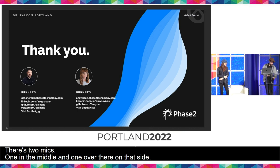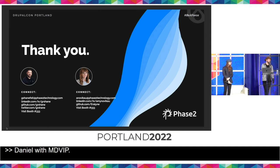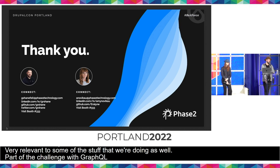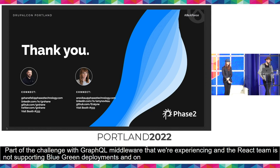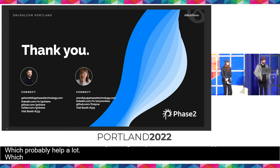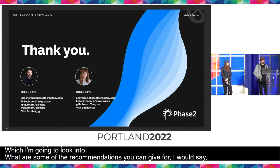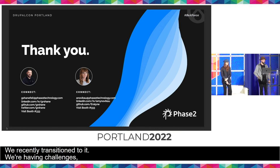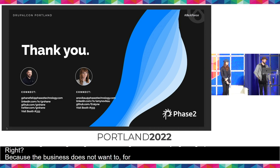Question from Daniel with MDVIP: Thanks for the presentation, very relevant to what we're doing. Part of the challenge we're experiencing with GraphQL middleware is the React team not supporting blue-green deployments on the Acquia platform. Storing queries outside of the app probably helps a lot. What are your recommendations for early development on React Native? We recently transitioned and are having challenges coordinating and not delaying graph work, because the business doesn't want to force app updates or deploy builds as often.